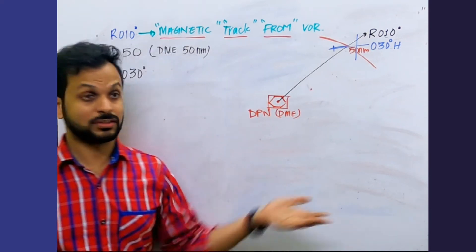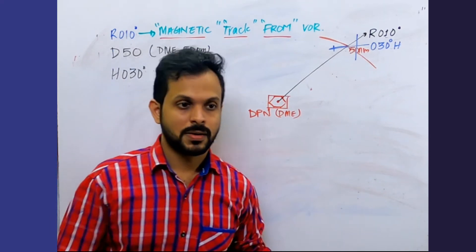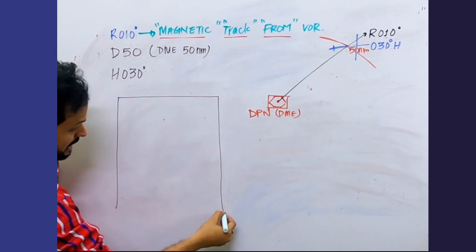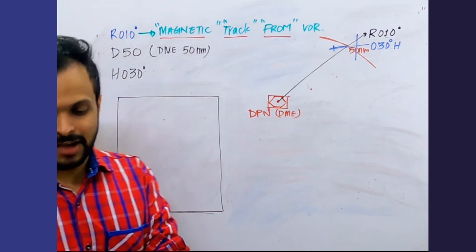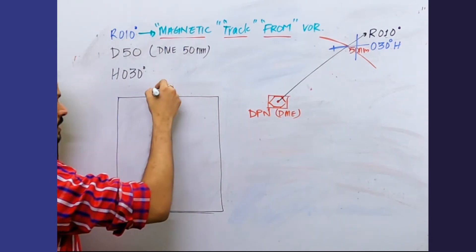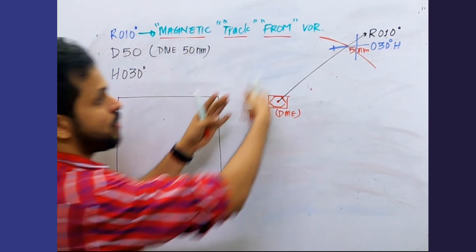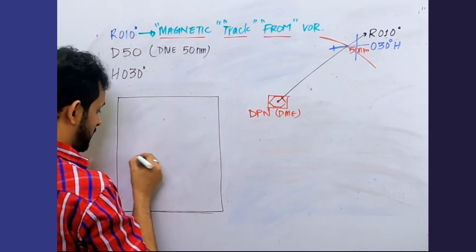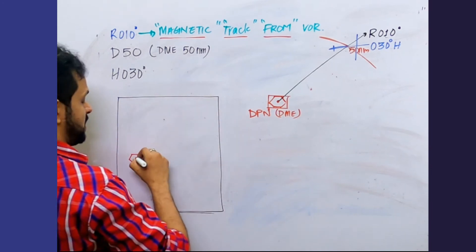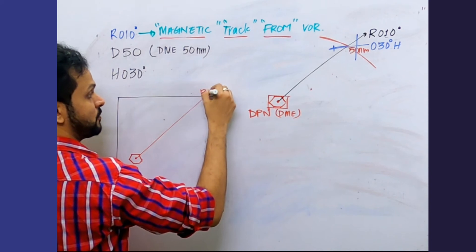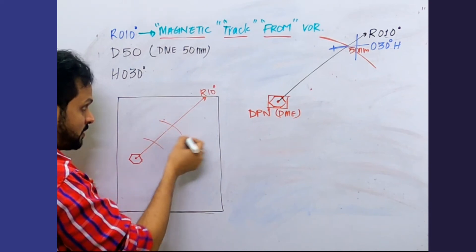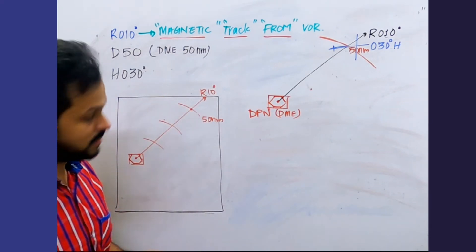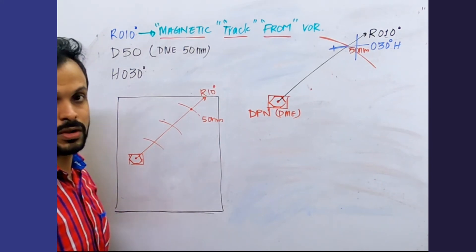One more thing: the variation which we considered previously in the NDB section as well as which we want to consider right now in the VOR section, where do you get the variation from? You get it from the chart. On the chart you have these dotted lines. Let me draw the chart once again because we are going to position fix for which we need the chart. On the chart we have the variation lines.